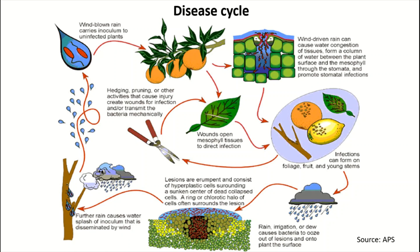When it rains, the bacteria spread onto fruits, foliage, and young stems, and then the disease cycle begins again.